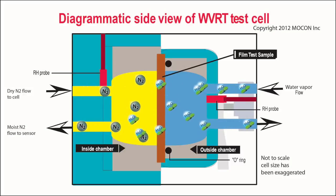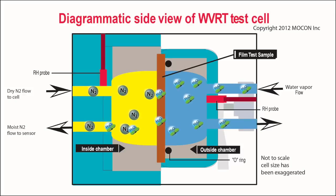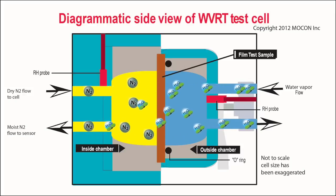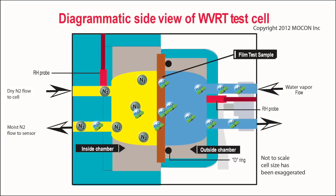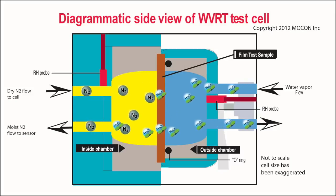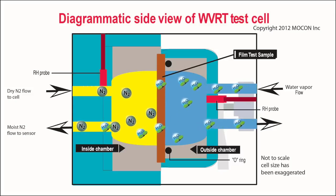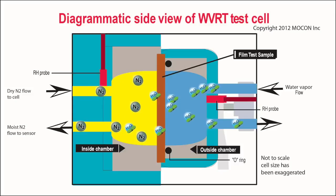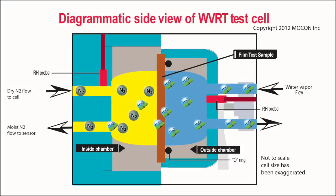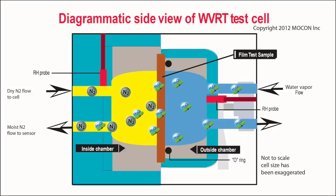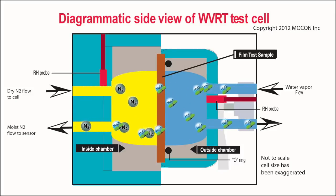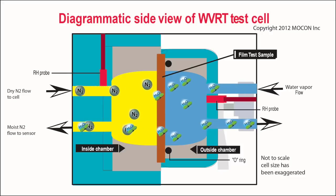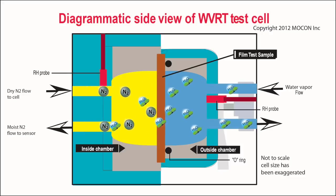A pulse-modulated infrared detector is used to measure the amount of water vapor in the nitrogen carrier stream. The WVTR is automatically calculated using the amount of moisture in the stream, the carrier gas flow rate, and the area of the film sample being tested. The water vapor permeability can also be calculated using the additional inputs of driving force and sample thickness.